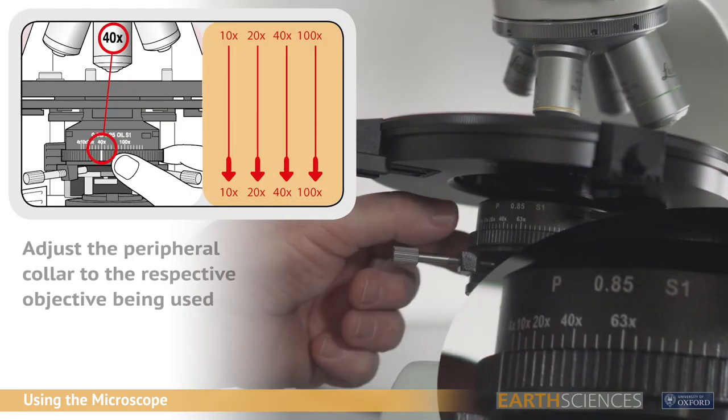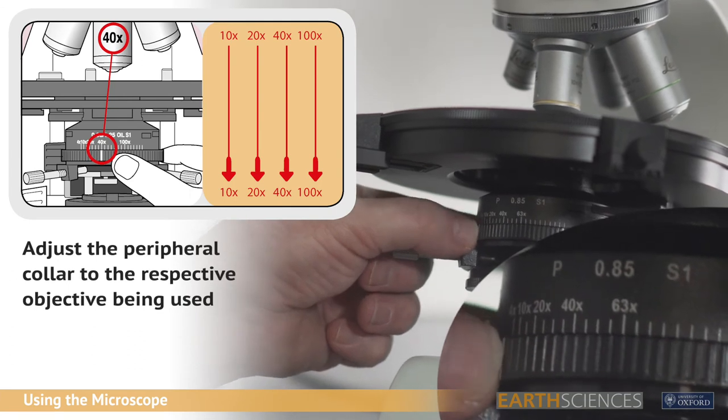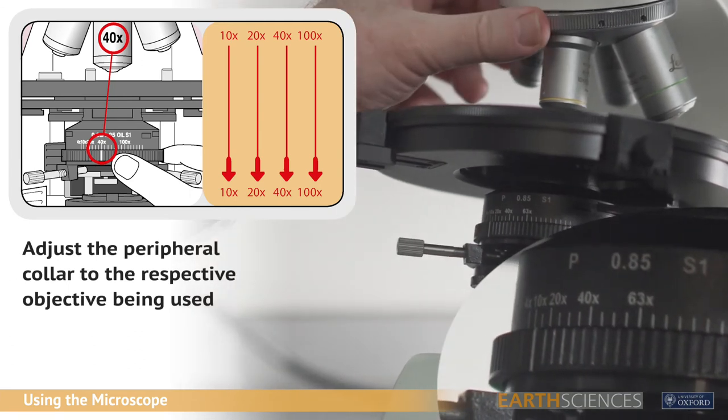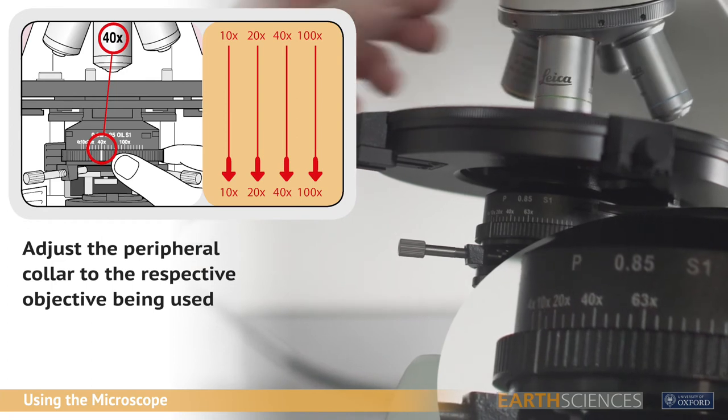The condenser contains the aperture diaphragm which is operated by the peripheral collar. Suggested positions for this in relation to the objective used are shown on the diaphragm.